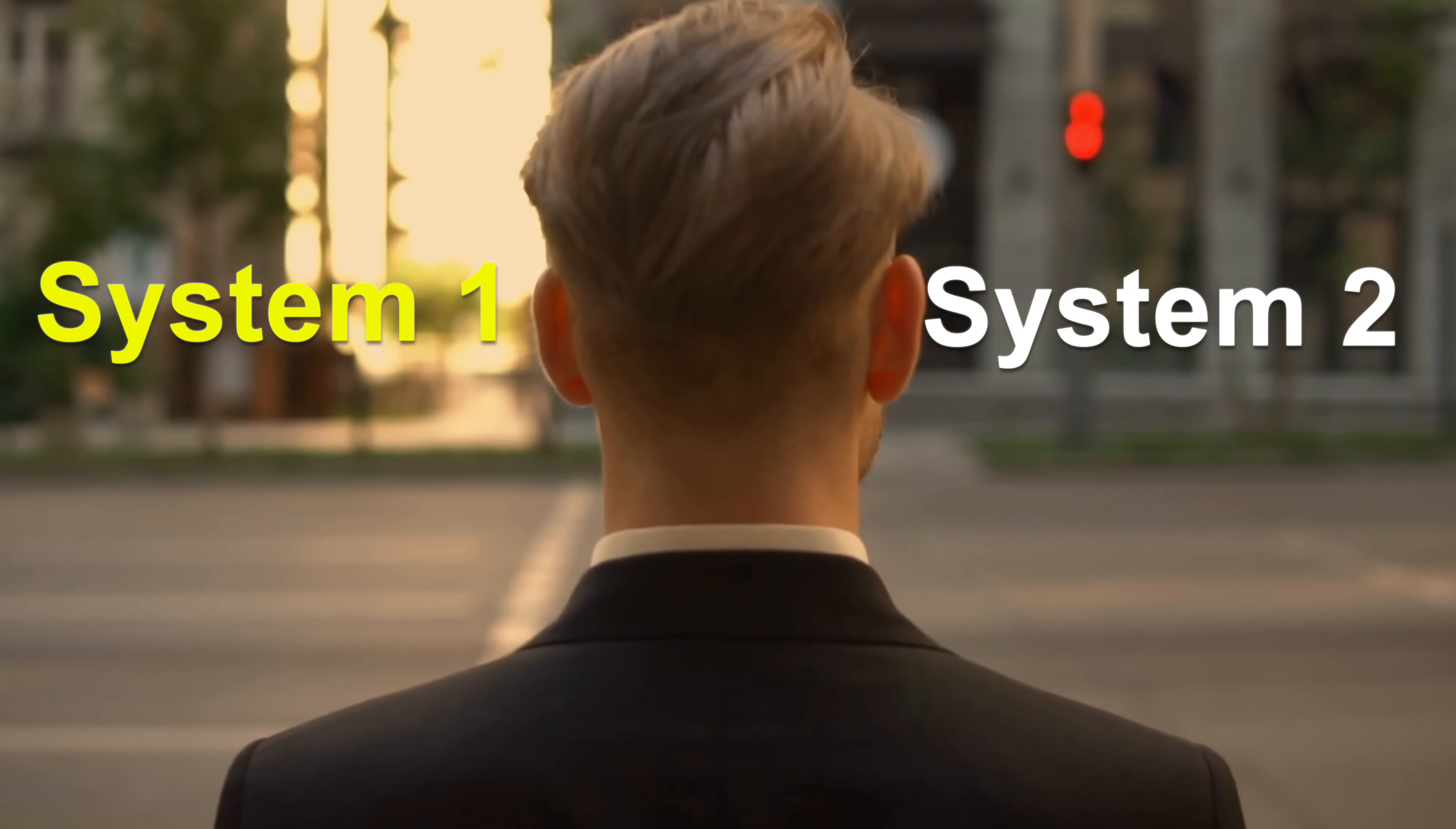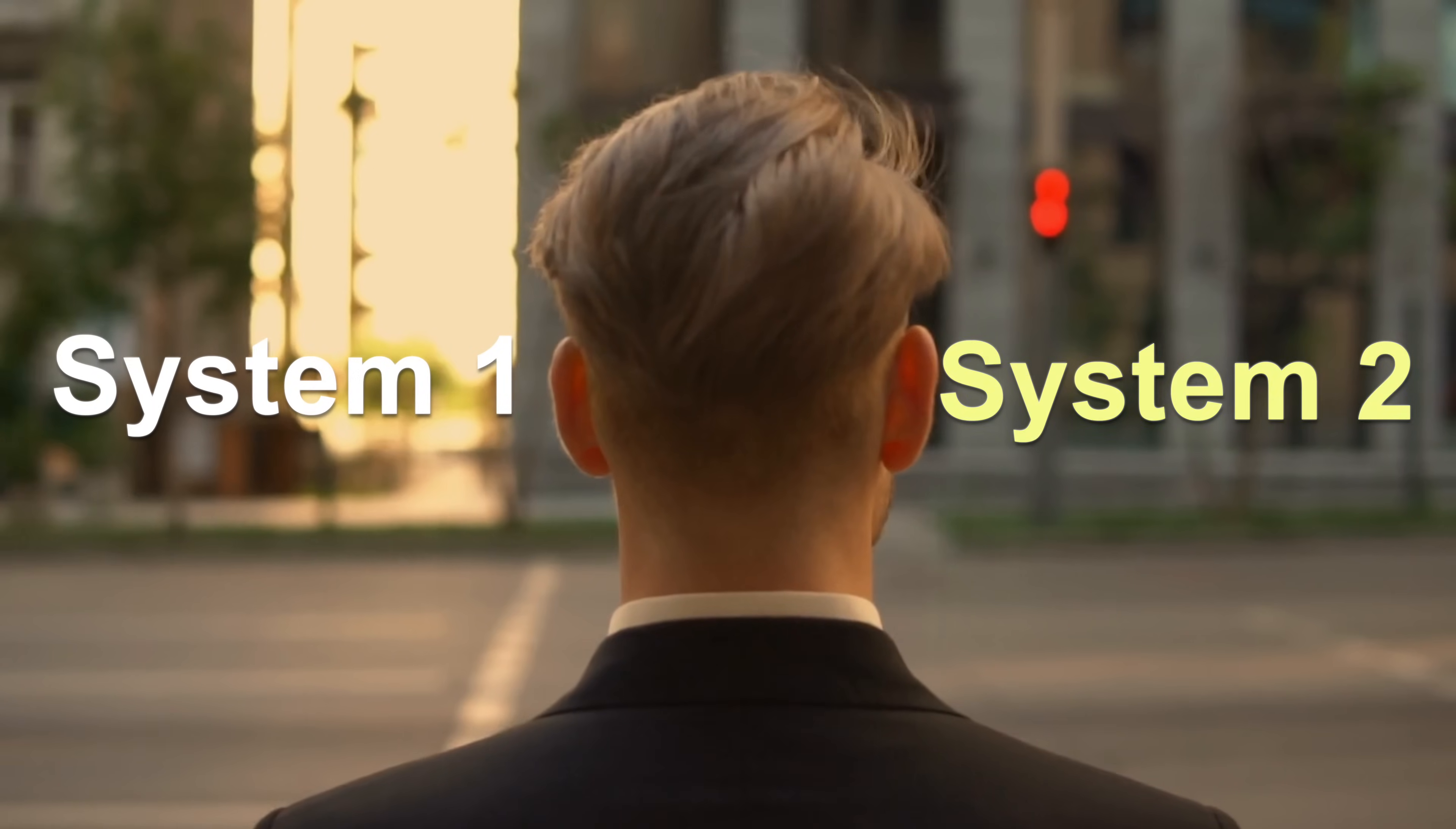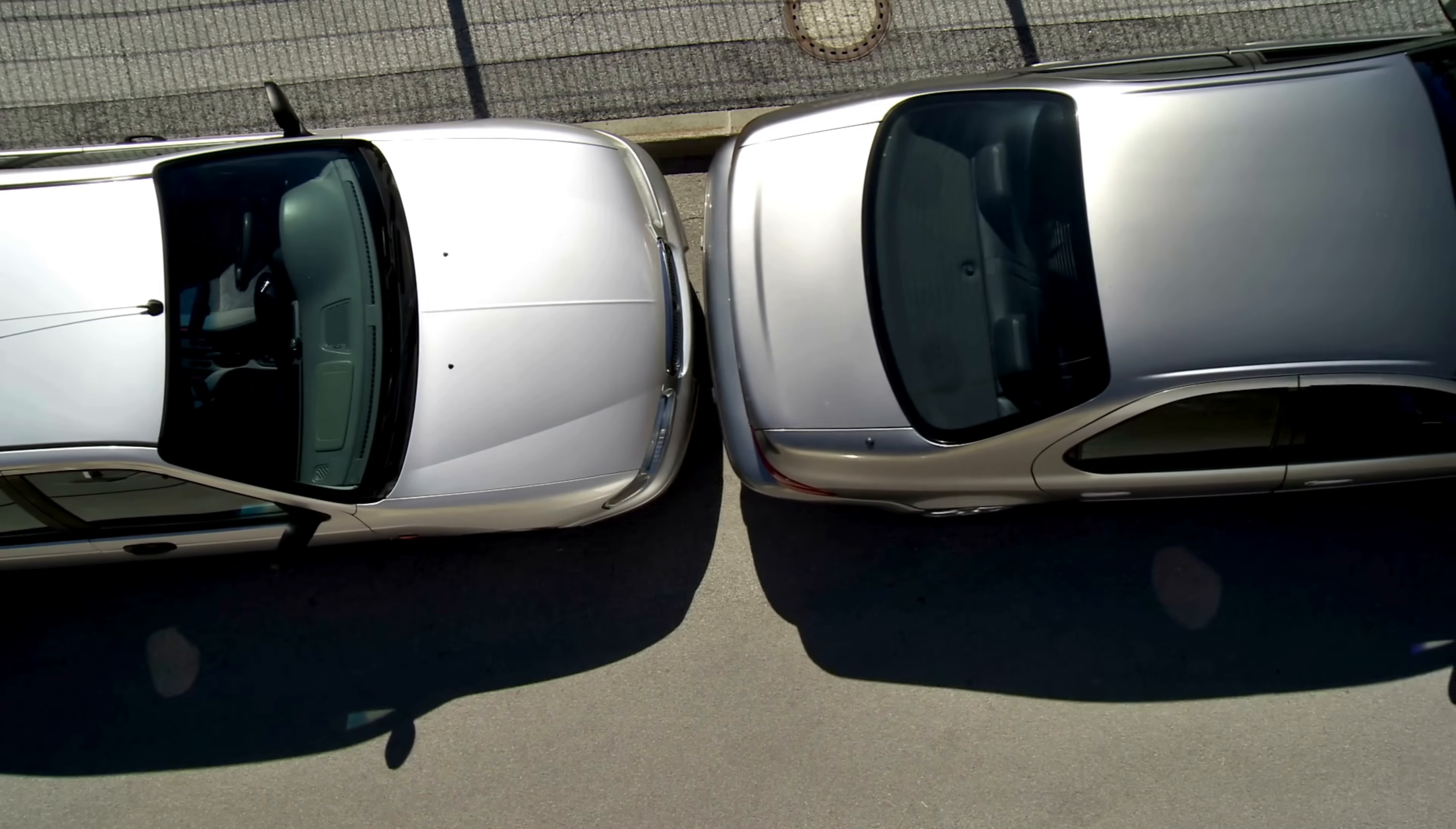System 1 is fast and intuitive, like when you drive a familiar route, read words on a large billboard, or finish the phrase bread and... System 2 is slower and more deliberate, like when you brace for the starting pistol in a race, solve a complex math problem, or park in a tight spot.